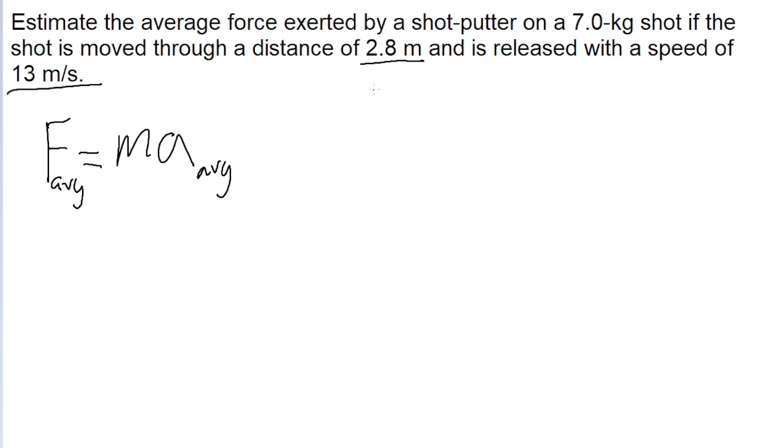So let's sort out our givens. We're given the final speed of the shot. We know that the initial speed of the shot is going to be zero, if we're starting at rest before the shot putter accelerates it with their hand. And we also know the distance that the shot moves through as it's accelerating.